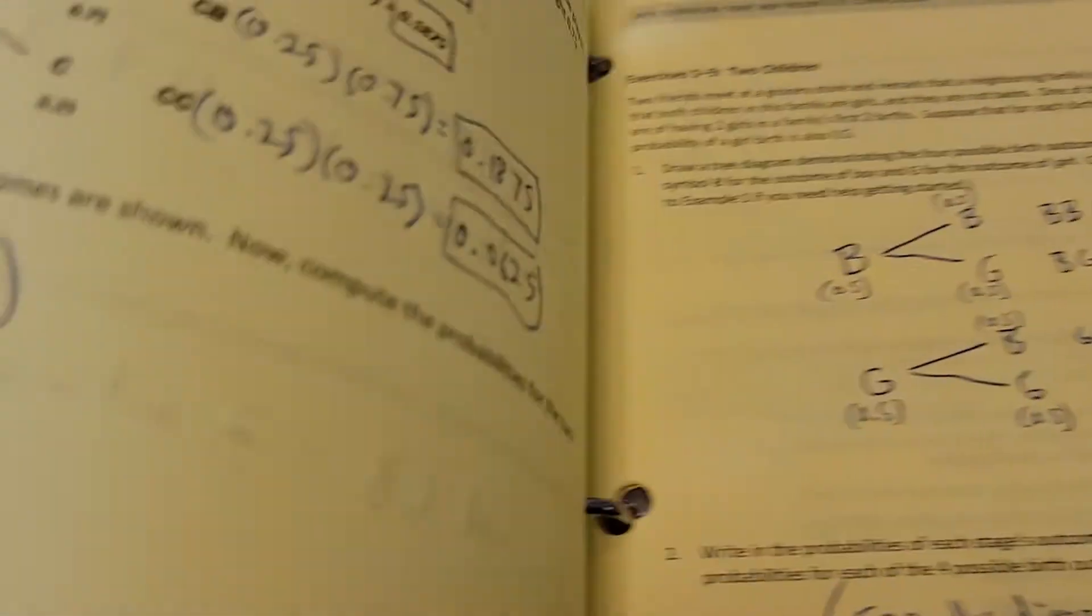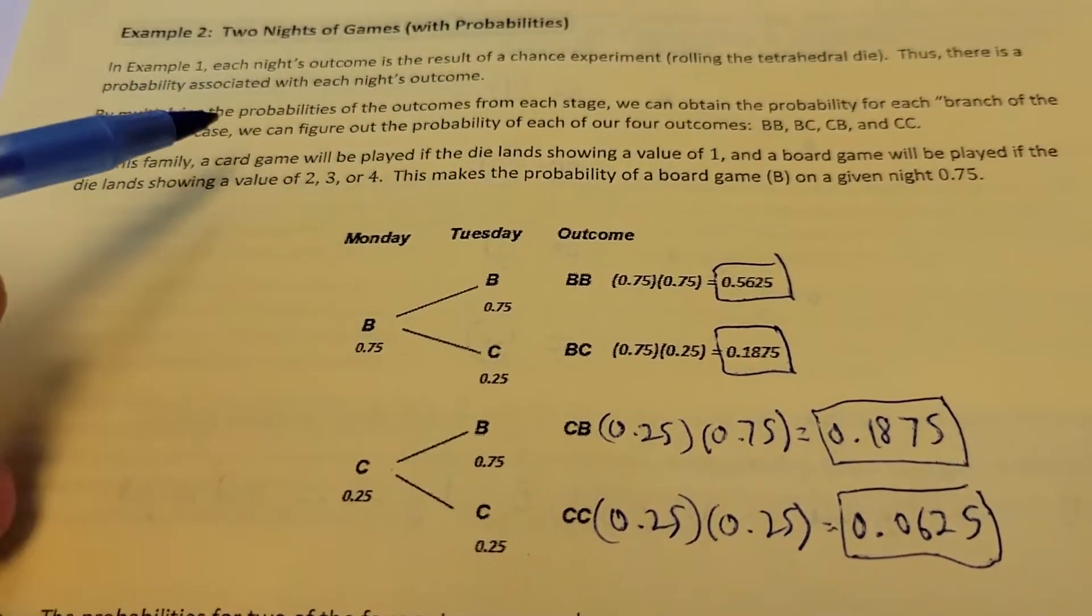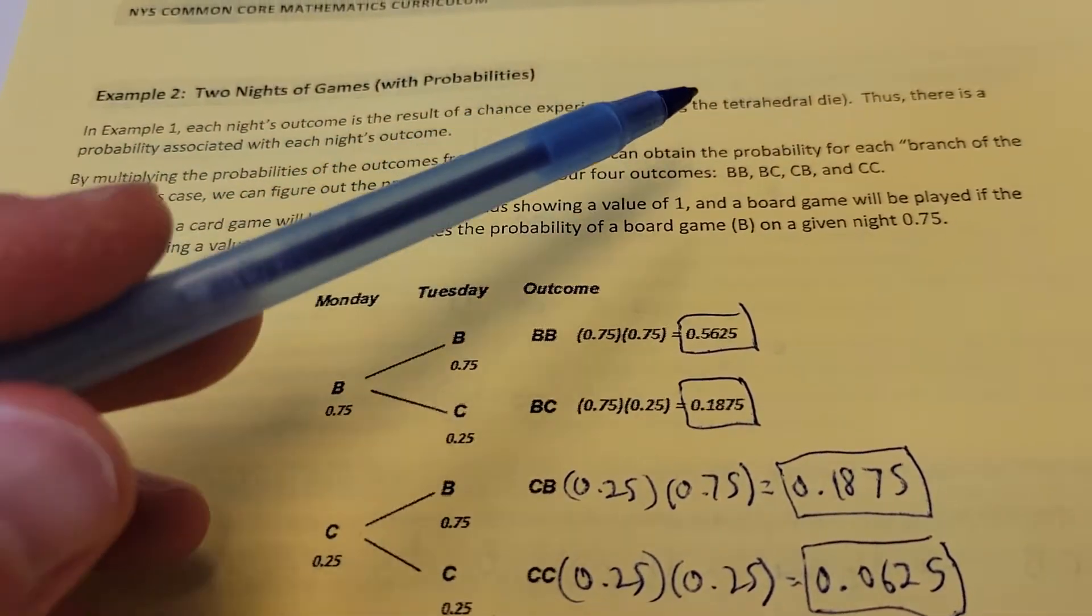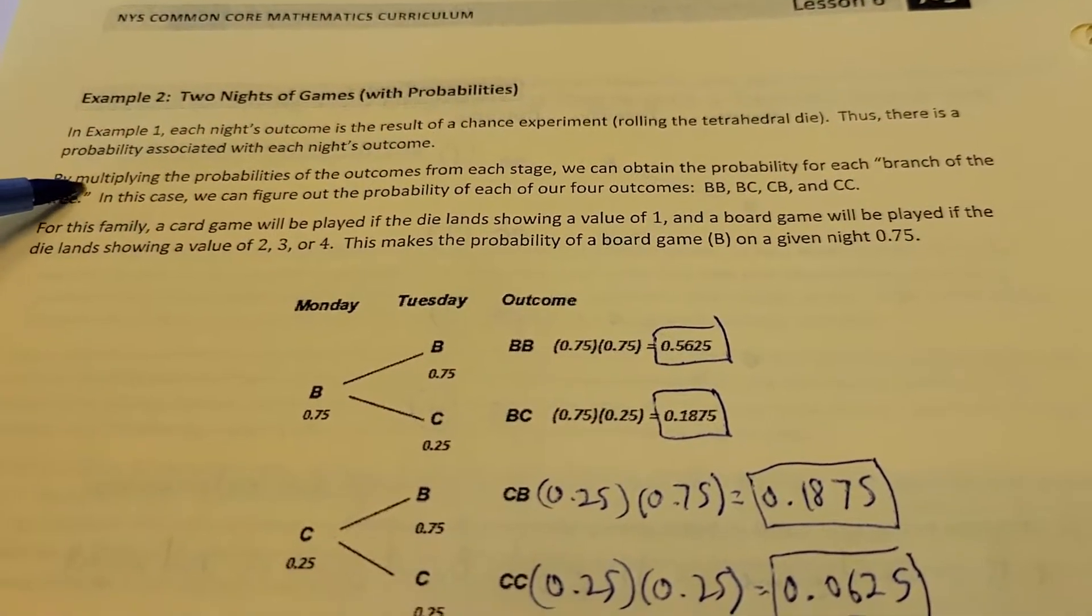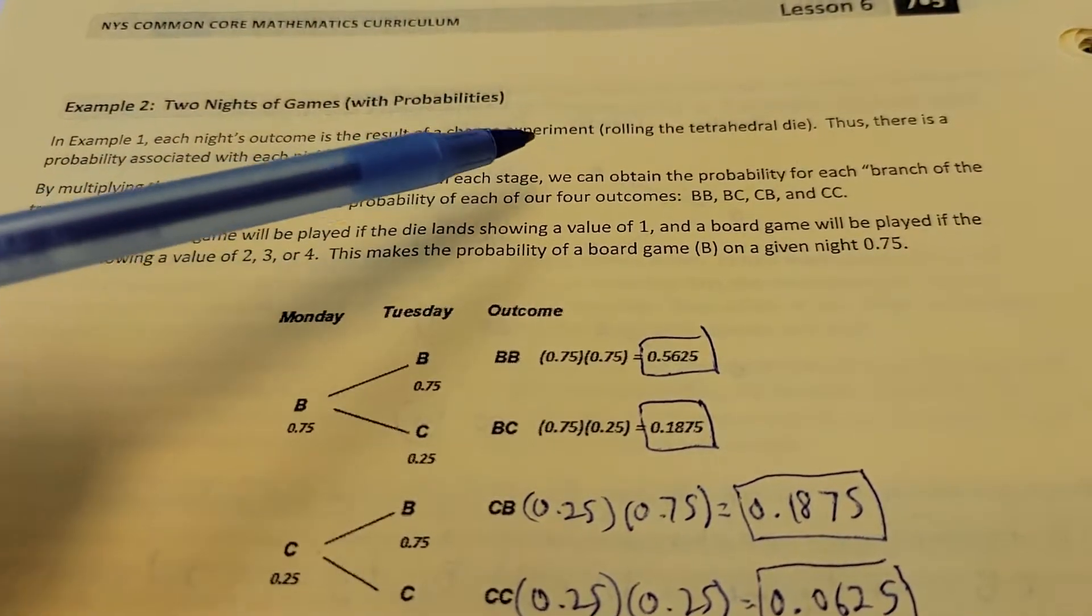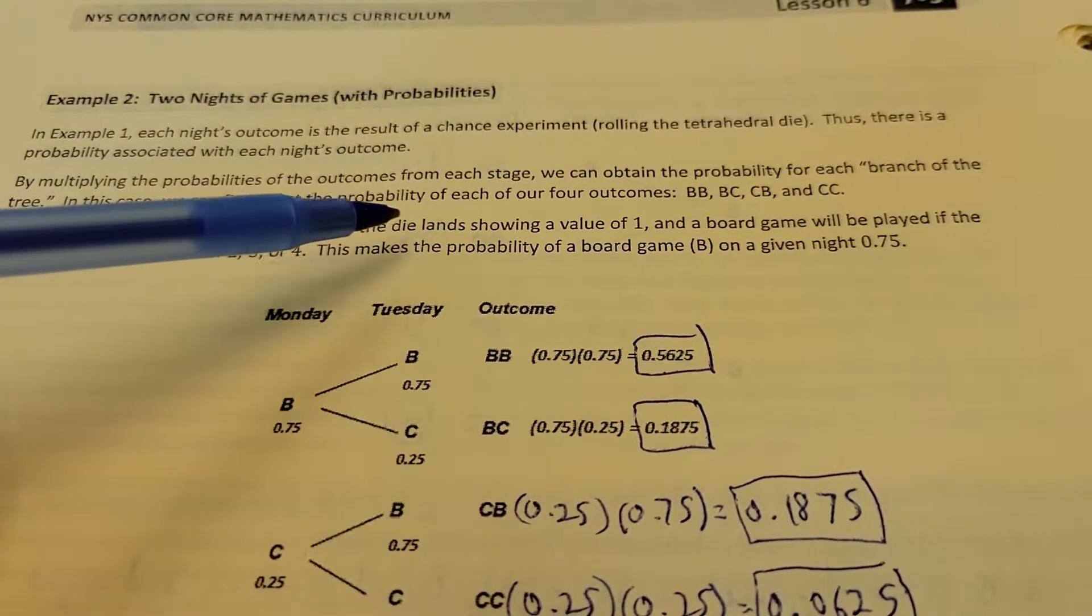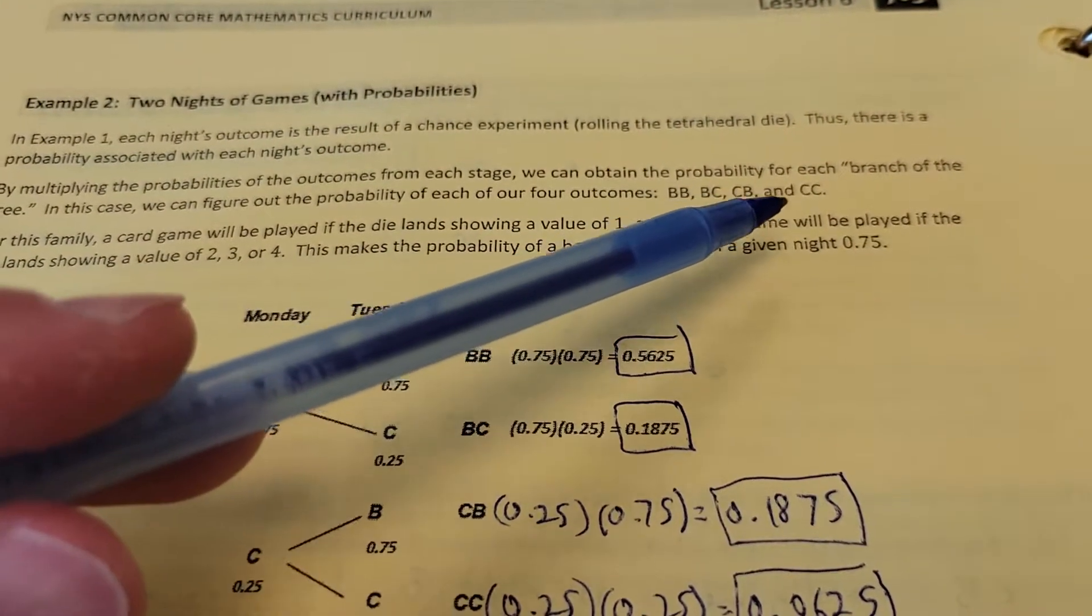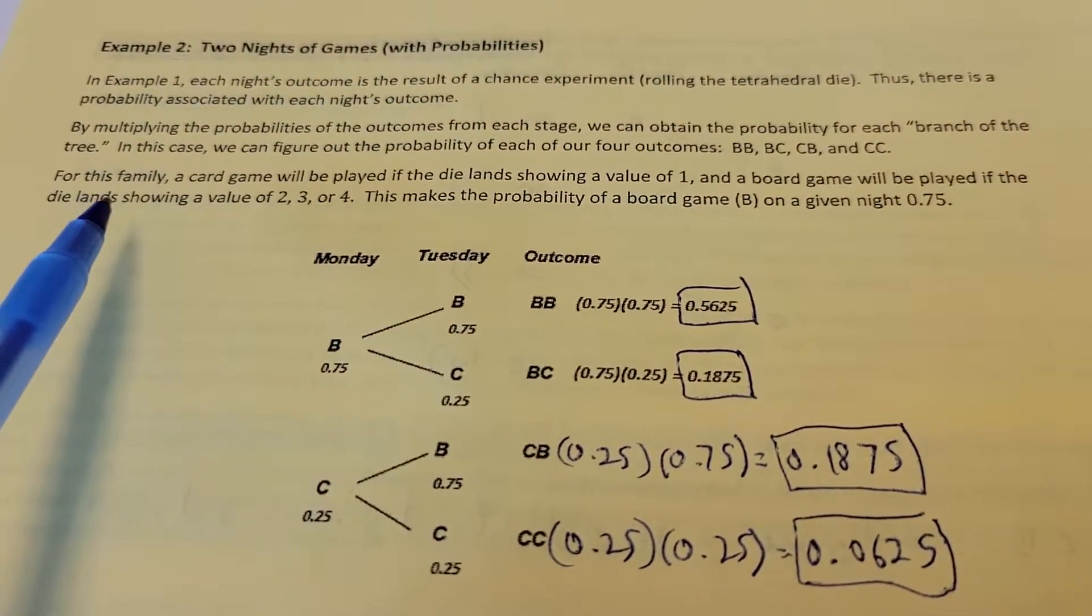Moving on to our next page. We're going to work the same table here, but now we're going to do a little bit more. As in Example 1, each night's outcome is the result of a chance experiment, rolling the tetrahedral die. Thus there's a probability associated with each night's outcome. By multiplying the probabilities of the outcomes at each stage, we can obtain the probability for each branch of the tree. In this case, we can figure out the probability of each of the four outcomes: BB, BC, CB, and CC. B stands for board games, C stands for card games.